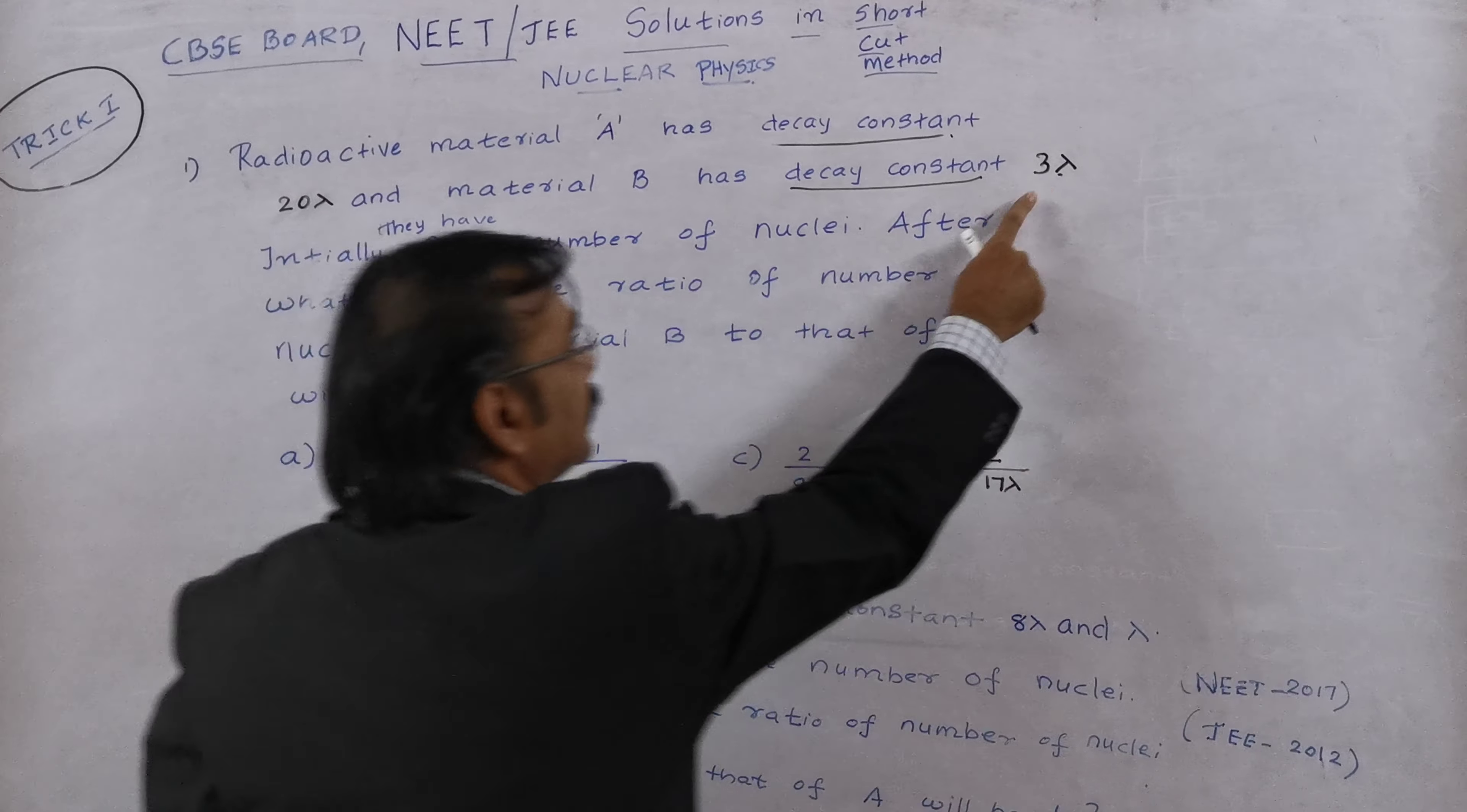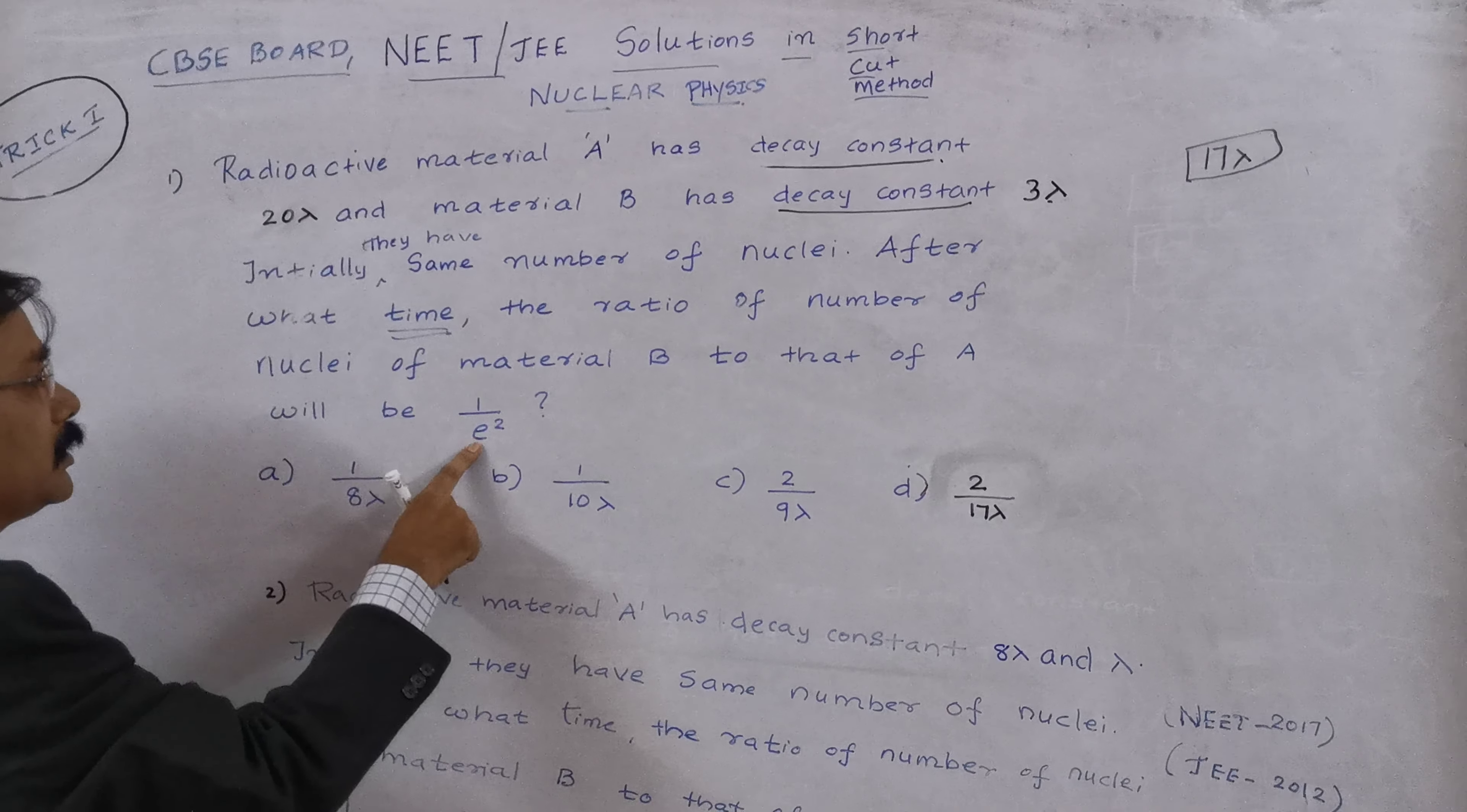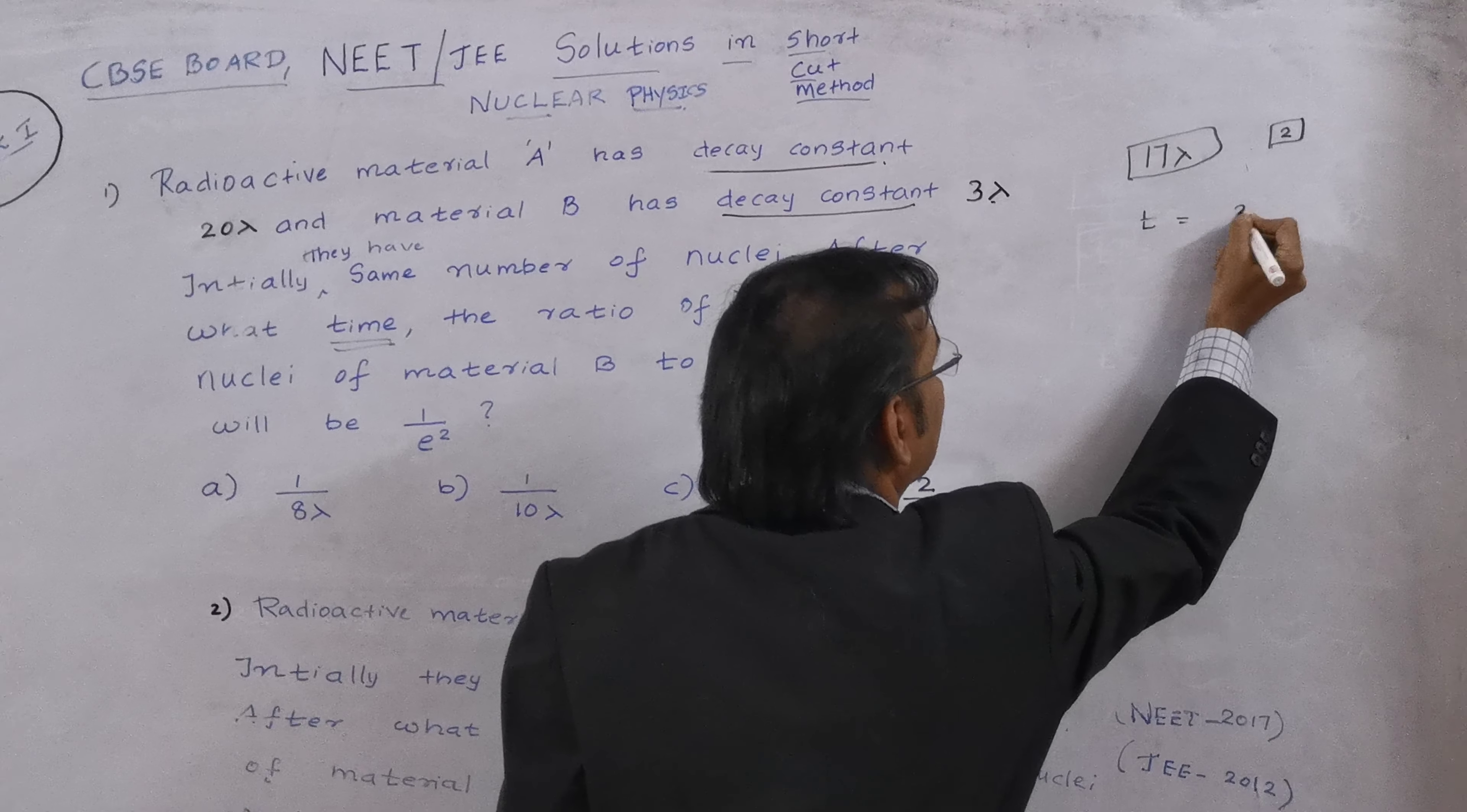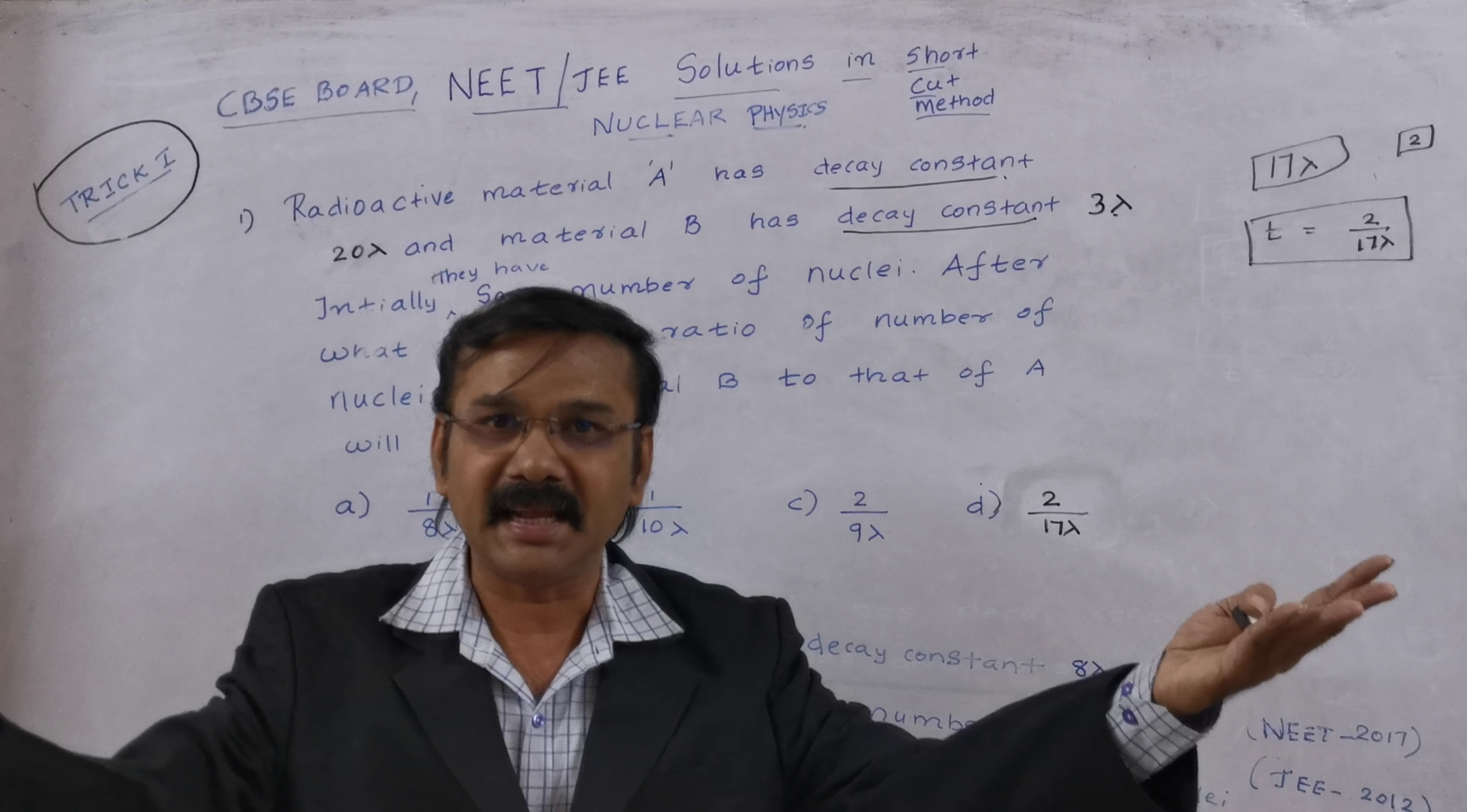Now you see here, it is 20 lambda and 3 lambda, subtract it, you will get 17 lambda and put it in a box in the rough color. And similarly see, what is the number to the exponential power. So it is 2. Now the question asks is time. The question asks is time here, so time t is equal to divide right hand side box divided by left hand side box, the answer is t is equal to 2 by 17 lambda. Now I hope we got the answer within 10 seconds.